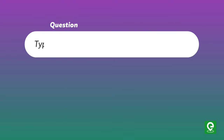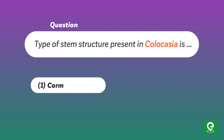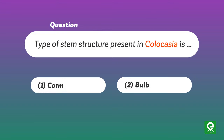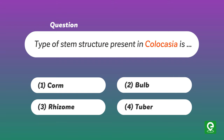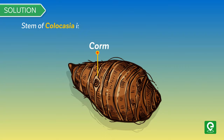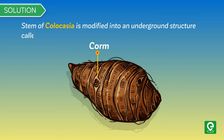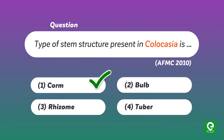Question: Type of stem structure present in Colocasia is — (1) corm, (2) bulb, (3) rhizome, (4) tuber. This was asked in AFMC 2010. Solution: The stem of Colocasia is modified into an underground structure called corm. Hence option 1 is the right answer.